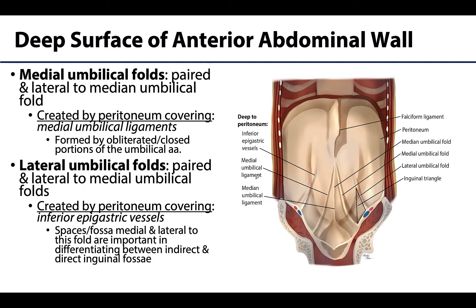Lateral to the median umbilical fold are the paired medial umbilical folds. These are separated from the median umbilical fold by the supravesical fossae — depressions on either side of the fold. The medial umbilical folds are formed by peritoneum overlying the closed or occluded portion of the umbilical arteries, often referred to as the medial umbilical ligament.